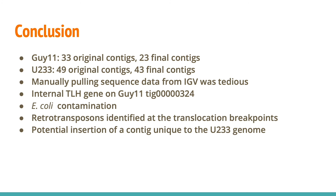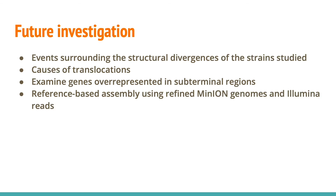We also identified retrotransposons associated with translocations in U233. Finally, using the MUMplot and BLAST searches, we found that U233 may have a unique inserted contig. Refined genomes can be studied for structural divergences between strains such as translocations and the causes of these events. The subterminal regions can also be studied for overrepresented genes that may be involved in the instability of the region. These refined genomes can also be used for reference-based assembly of other genomes.